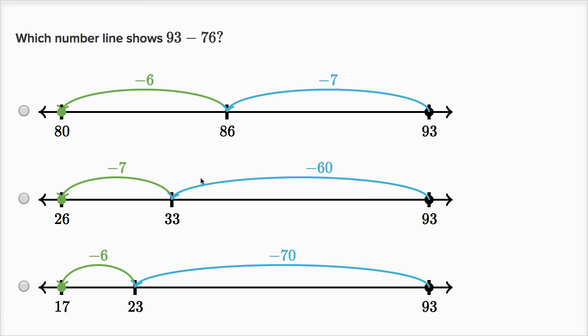Here we subtract 60, and then we subtract 7. But that's subtracting 67, not 76. We've got to subtract 7 tens, and then 6 ones. So here we're subtracting 70. And then we are subtracting 6 ones. So that's definitely going to be the right choice.